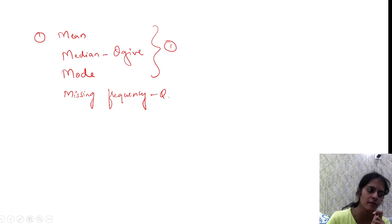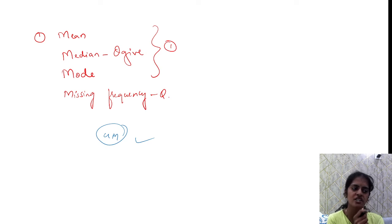You need to know the formula for mean, median, and mode. In tabular form, you'll find questions asking for mean, median, and mode. That's worth 6 marks.